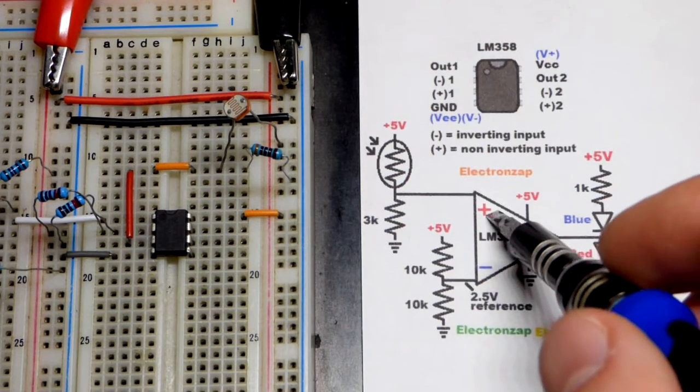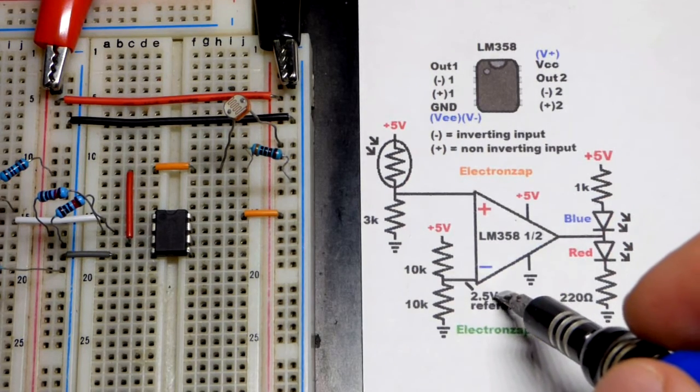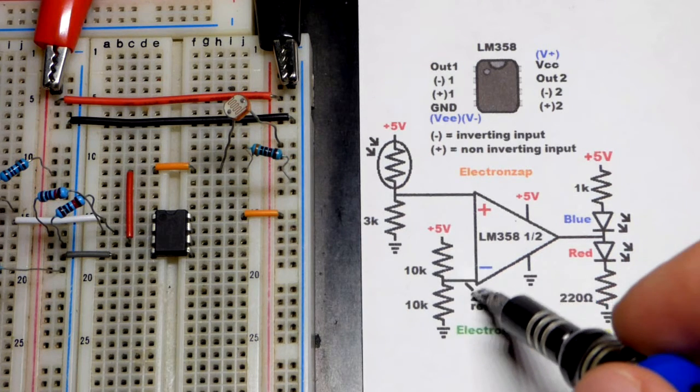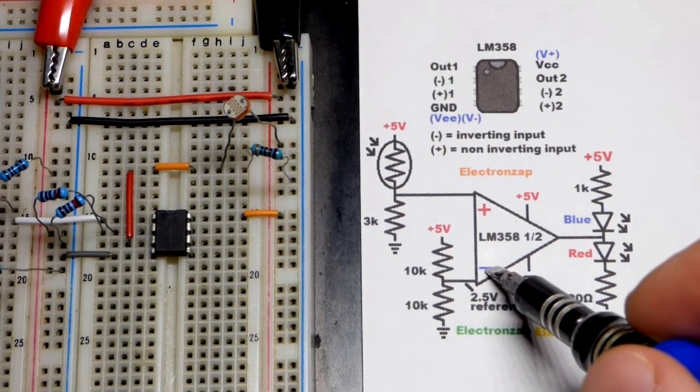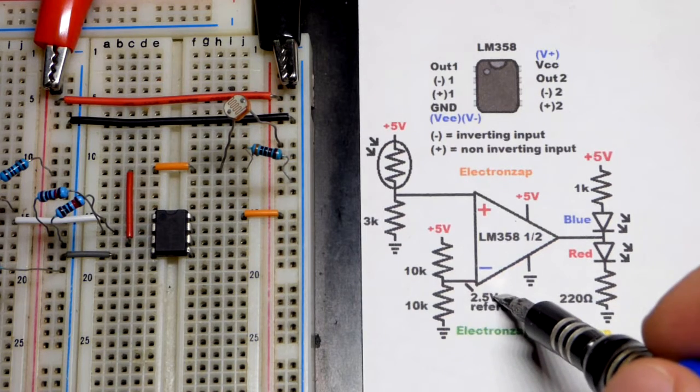And we have the same basic schematic except now the fixed value resistors are lower. They are still to the inverting input though. We got a reference of 2.5 volts.